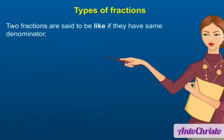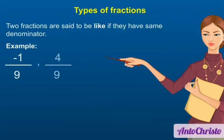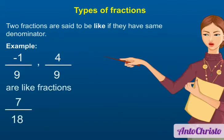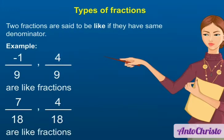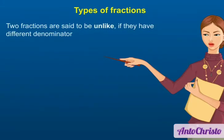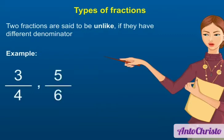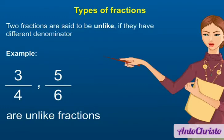2 fractions are said to be like if they have the same denominator. 2 fractions are said to be unlike if they have different denominators. Examples: 3/4 and 5/6 are unlike fractions.